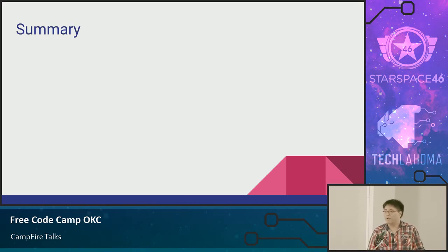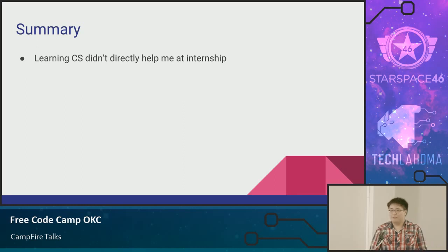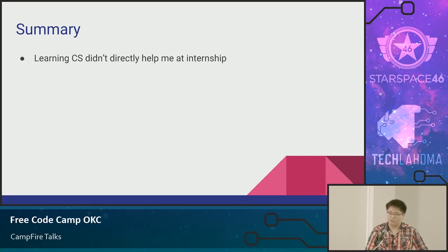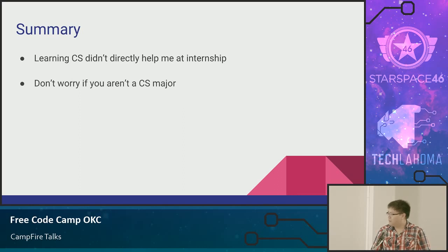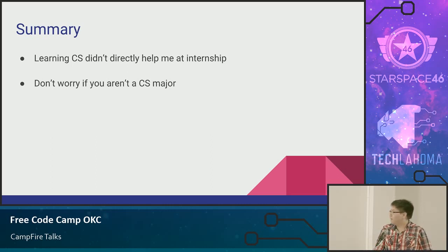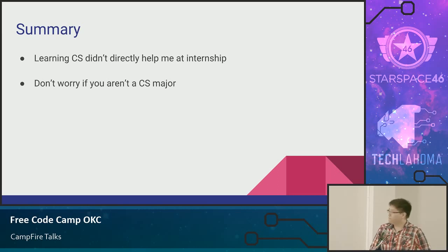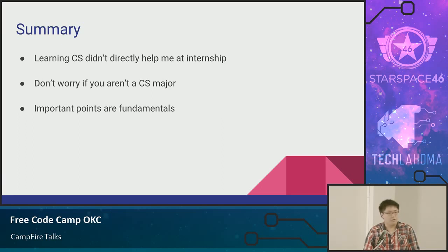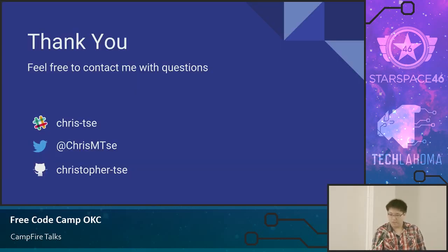So just to wrap up — learning computer science didn't really directly help me. There were things that made it easier, but nothing directly helped because I was working with HTML, CSS, and maybe a little JavaScript, and they didn't teach that at school. My main message is: don't worry if you're not a computer science major or if you stopped studying CS. It's not a big deal, especially in front-end web development where it's more about design and building pages rather than sorting arrays efficiently or balancing a binary tree. What's important is the fundamentals: how to write clean code, how to use version control, how to collaborate with others on big projects.